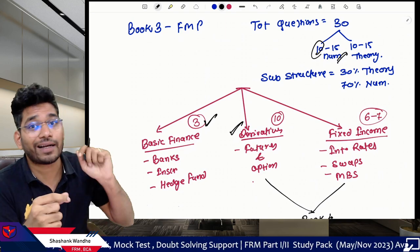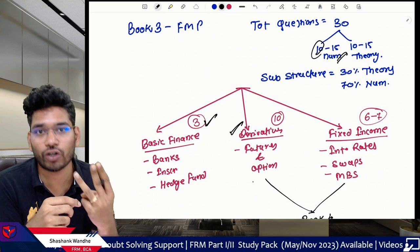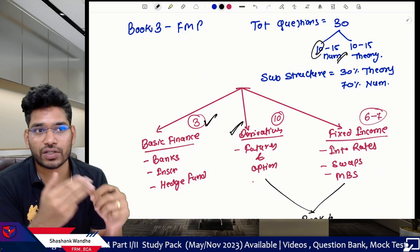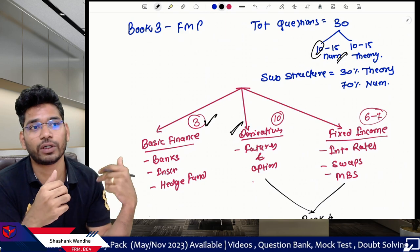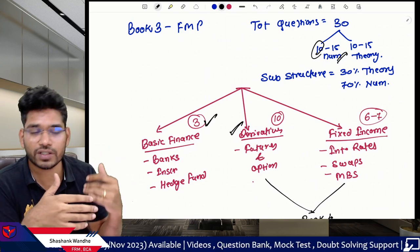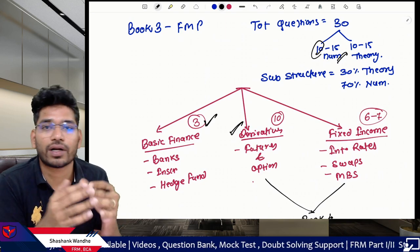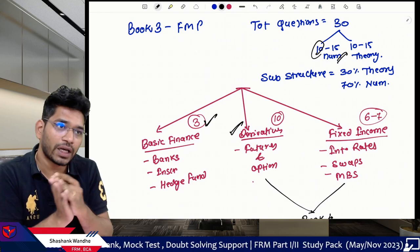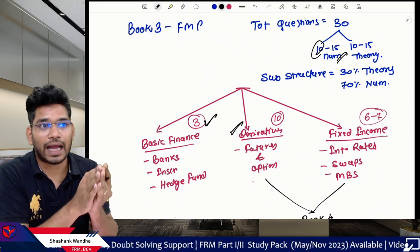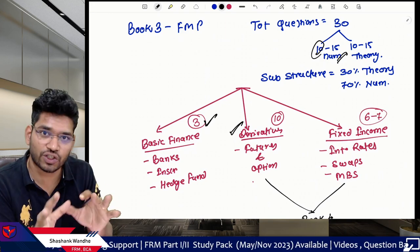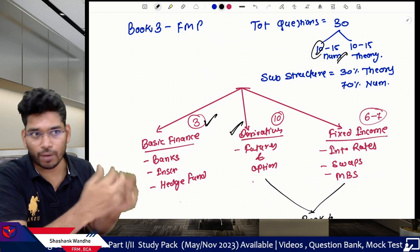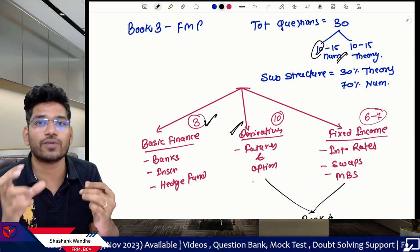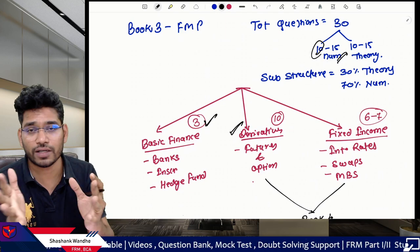If you already understand the basics of finance, move on to the derivatives section. Finish all derivative topics, and I'll also guide you on which concepts are important. Once done with derivatives, move to Book 4's Valuation and Risk Models, which has three directly related topics: the Black-Scholes-Merton model, binomial trees, and the Greeks. Cover those together with derivatives since they are directly linked.